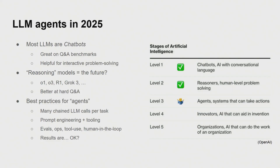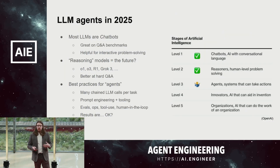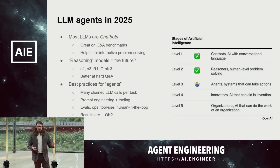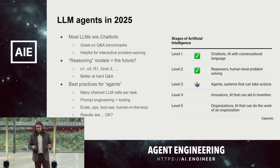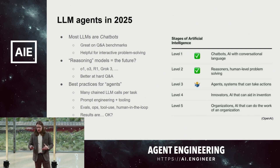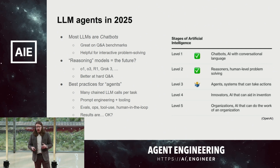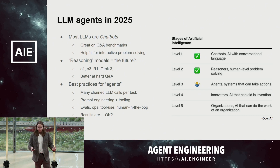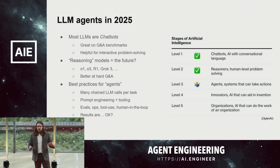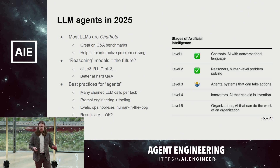Where are we today? Most LLMs we work with are essentially chatbots. It's helpful to think about OpenAI's five levels framework here. We did pretty well with chatbots, and we're doing pretty well with reasoners — models great for question and answer and interactive problem solving: o1, o3, R1, Grok 3, Gemini, models really good at thinking longer. And we're trying to figure out how we take all of this and make agents at level three, systems that are taking actions, doing things that are longer, harder, and more complex.